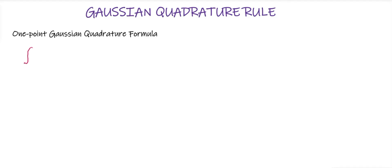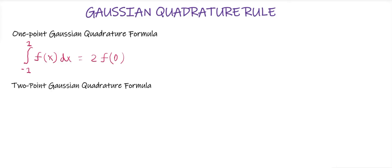First of all, we'll see the formulas and then we'll solve an example. The one-point Gaussian quadrature formula is: the integration of f(x) dx from minus one to one is equal to two into f of zero.